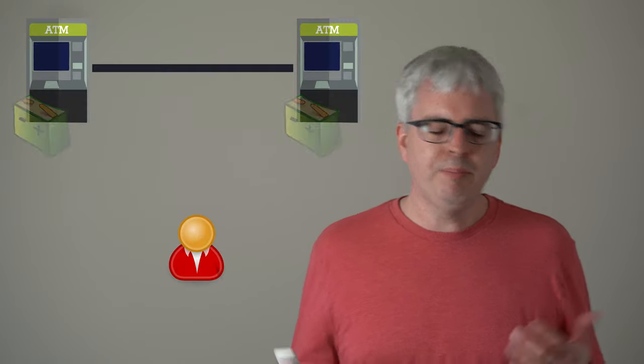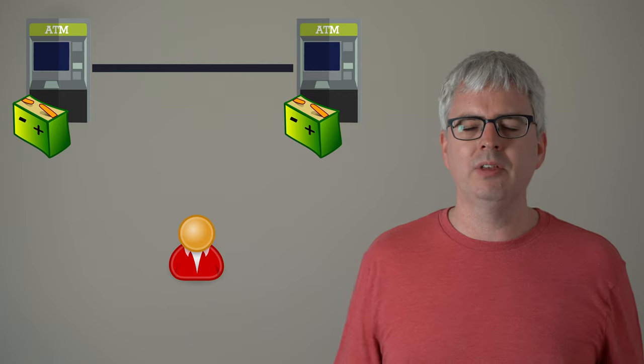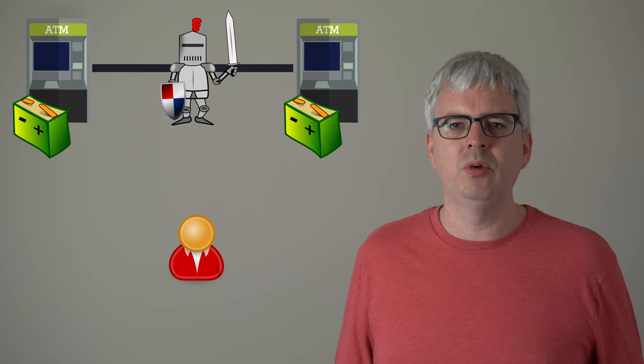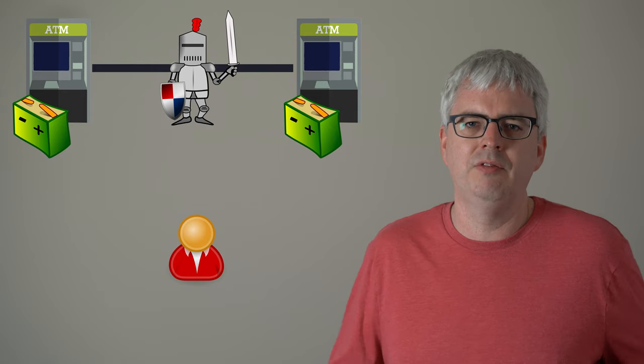So sacrificing consistency is not the only way we could increase availability in our system. You could add battery backups to your ATM, so they're less likely to fail due to a power outage. We could armor plate the network connections between them, so that the network connections are less likely to physically fail.